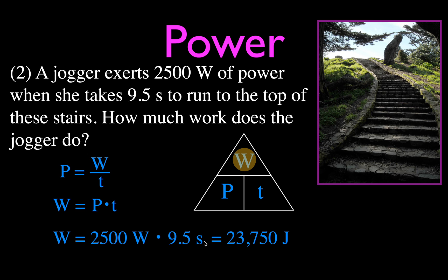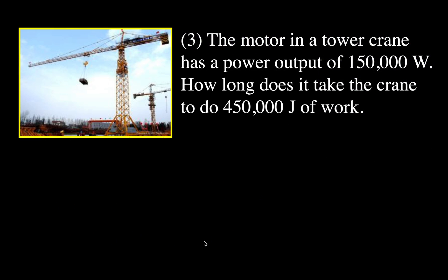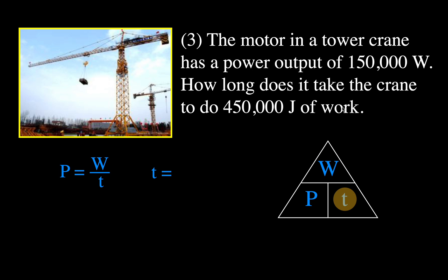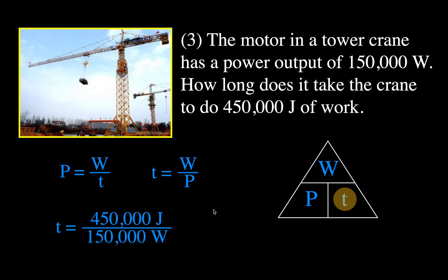Example 3: A motor in a tower crane has a power output of 150,000 watts. How long does it take to do 450,000 joules of work? We solve for time: time equals work divided by power. That's 450,000 joules divided by 150,000 watts, which equals 3 seconds. So it takes only 3 seconds for that crane to do 450,000 joules of work.